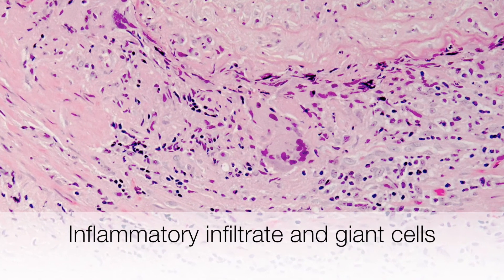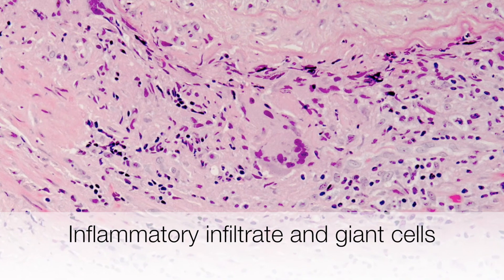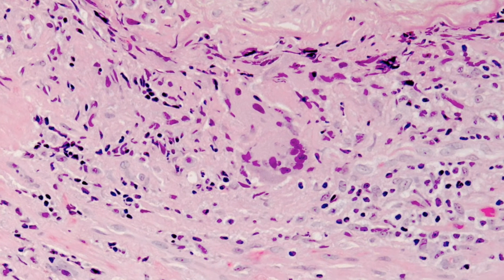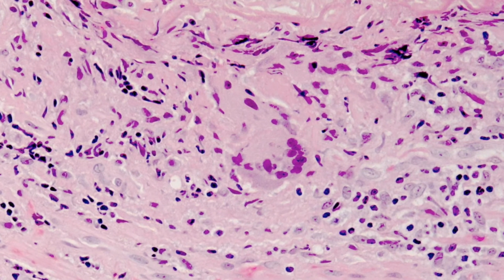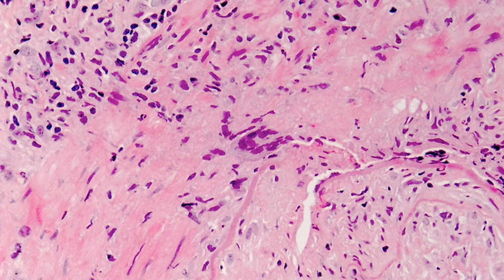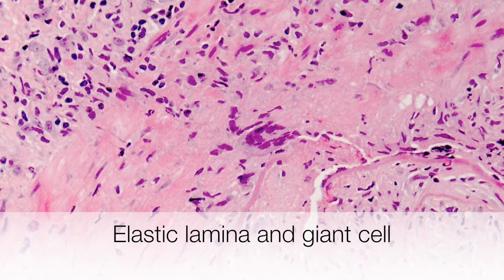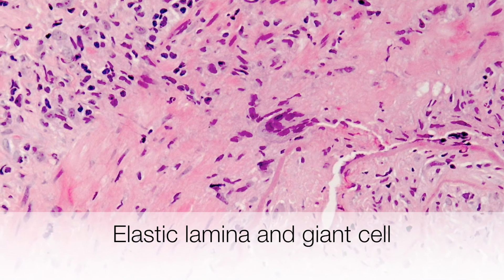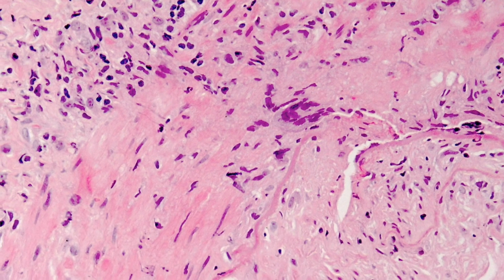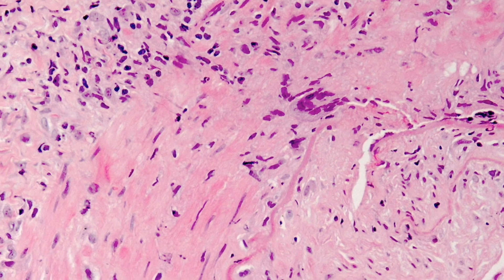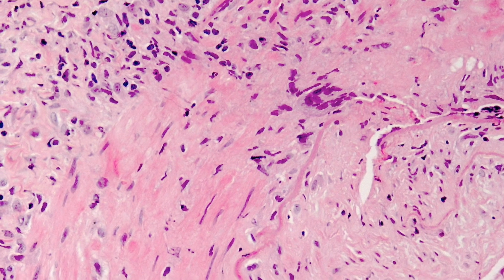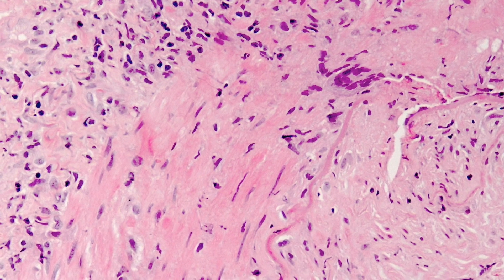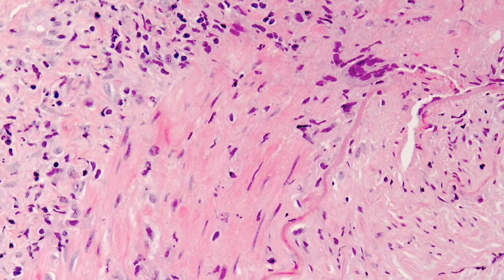Here the lymphocytes and histiocytes can be more clearly seen, and in the middle of the picture is a giant cell. The giant cells tend to be situated adjacent to fragments of the elastic lamina. In this picture you can see a giant cell, and beneath it, running to the bottom of the picture, is a squiggly red line — this is the elastic lamina.